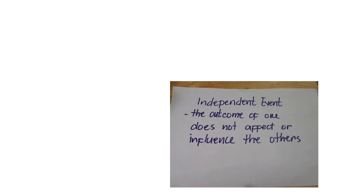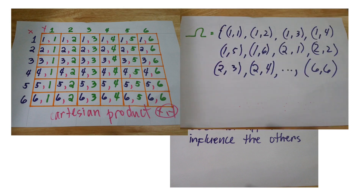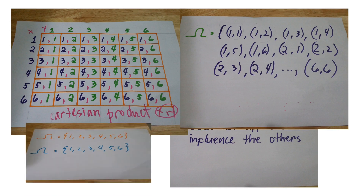In our last session, we talked about random variables and independent events. We were able to map measurable functions and their values. We were also able to learn about the probability measures of a fair die and a not-fair die, and appreciate how it is connected to our real life.